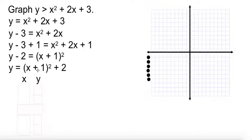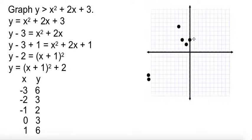Now we're ready to make our x-y table. We know the vertex is negative 1, 2. So then we pick 2 numbers above and 2 numbers below and plug and chug. Negative 3 gives us 6, 1 will also give us 6, negative 2 gives us 3, and 0 also gives us 3.